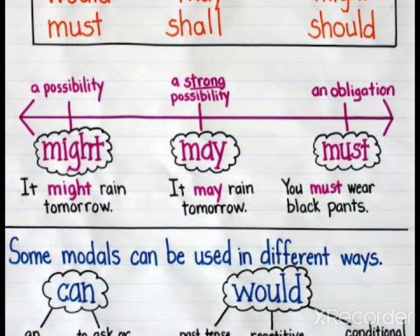Some modals can be used in different ways. For example, 'can' and 'would.' 'Can' can be used to show ability: 'Ben can speak French.' 'Can' is also used to ask or grant permission: 'You can use my marker.' 'Would' is used in past tense: 'Dad said he would buy me new shoes.' It can also show repetitive action: 'When my cousins lived in Colorado, we would visit there every winter.' And in conditional mood: 'If I had enough money, I would buy a drum set.'